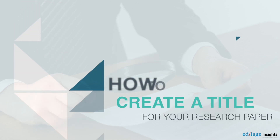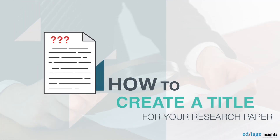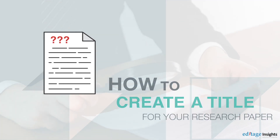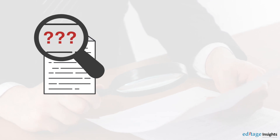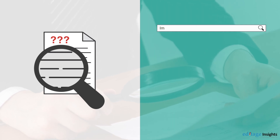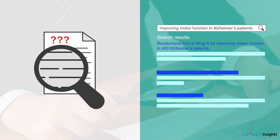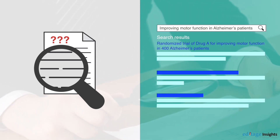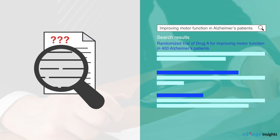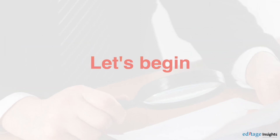Hello! Today we'll discuss the most important aspect of a research paper: the title. The title is the first thing journal editors and reviewers will see when they receive your paper. It is also the only aspect that will be freely available to readers through search engines or indexing databases. Follow these steps to create the perfect title for your paper.